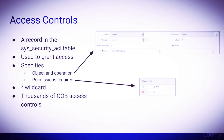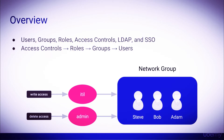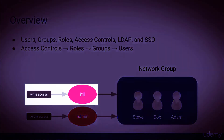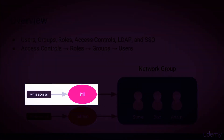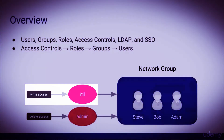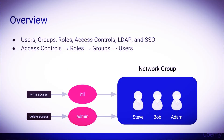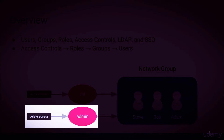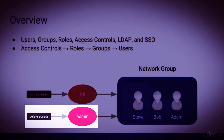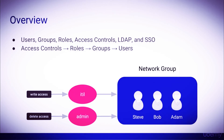There are thousands of out-of-the-box access control rules which are mapped to the out-of-the-box roles. Looking at the overview slide again, the write access control rule is assigned to the ITIL role, and the delete access control rule is assigned to the admin role. The roles ITIL and admin are then assigned to the network group, which contains three users.